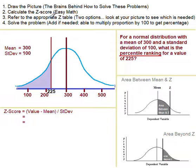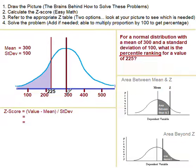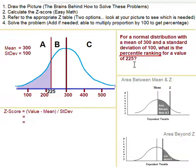Step 1: draw the picture. We have the mean and the standard deviation marked within a normal distribution, with 225 also marked. Draw one vertical line for the mean and another for the value. Mark the mean and indicate the values for plus/minus one and two standard deviations. Since it's a percentile ranking problem, shade the area below 225.